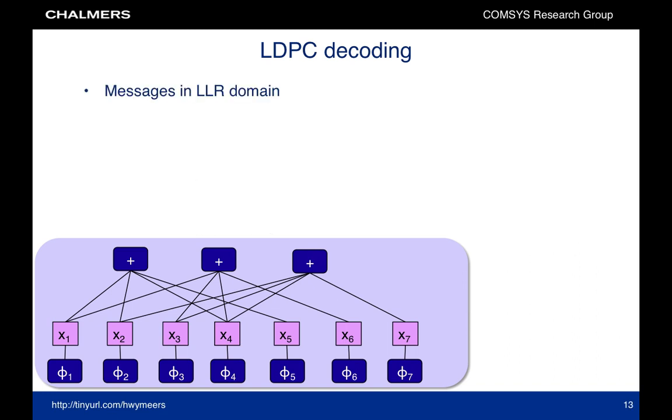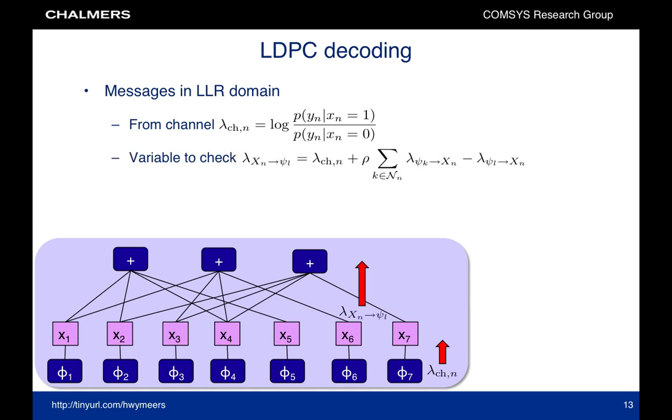We can now perform our message passing algorithm. Just as in standard LDPC decoding, we work in the log likelihood ratio domain. The messages from the channel are the standard log likelihood ratios. The messages from variable nodes to check nodes are now modified with the parameter rho. When rho is 1, we find standard belief propagation. The messages from check nodes to variable nodes are unchanged. In the check nodes, we can now apply standard sum product algorithm through the max star operation or min sum decoding.